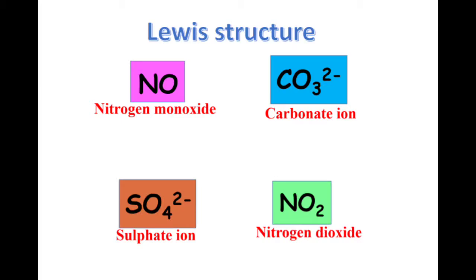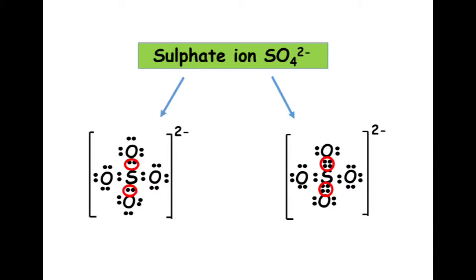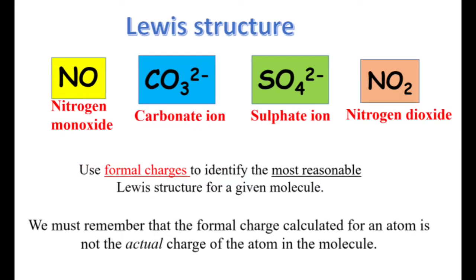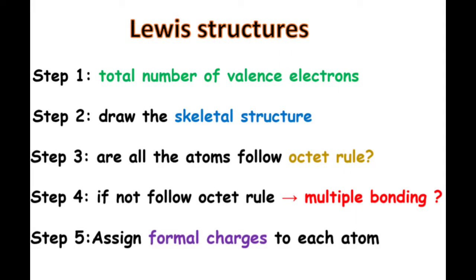Now let's go to the first part: what are the steps of drawing Lewis structures? Today we will discuss how to draw the Lewis structure of the following molecules. I will use the formal charge concept to explain how to draw the Lewis structure for sulfate ion and nitrogen dioxide, even though the formal charge concept is not in the STPM syllabus. The reason for using the formal charge concept here is that there are two possible structures of sulfate ion, so we can use formal charge to determine the correct Lewis structure. If you want to determine the charge of each atom in the molecule, or there are two possible Lewis structures, then you can go to step five: calculation of the formal charge.